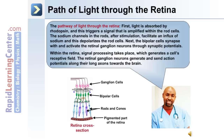In order for our eyes to function, they must process incoming light. First, light is absorbed by rhodopsin, triggering a signal that is amplified within the rod cells. The sodium channels in the rods facilitate an influx of sodium which depolarizes the rod cell. Next, the bipolar cells synapse with and activate the retinal ganglion neurons through synaptic potentials. Within the retina, signal processing generates a cell's receptive field, and the retinal ganglion cells generate and send action potentials along their axons towards the brain.